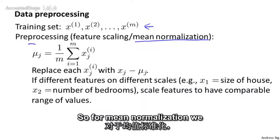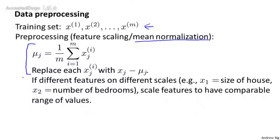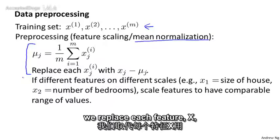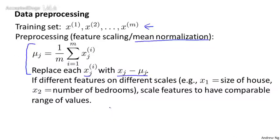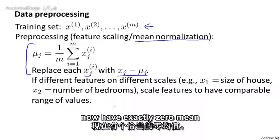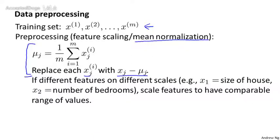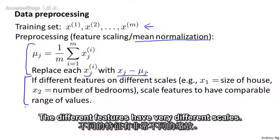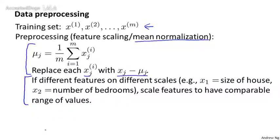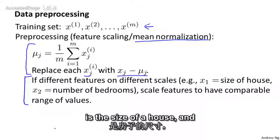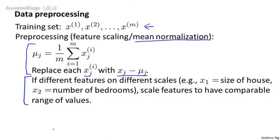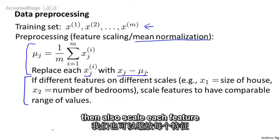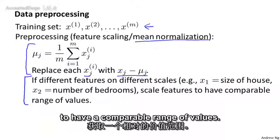For mean normalization, we first compute the mean of each feature, and then we replace each feature x with x minus its mean. This makes each feature now have exactly zero mean. Then second, if the different features have very different scales — for example, if x1 is the size of a house and x2 is the number of bedrooms — we then also scale each feature to have a comparable range of values.